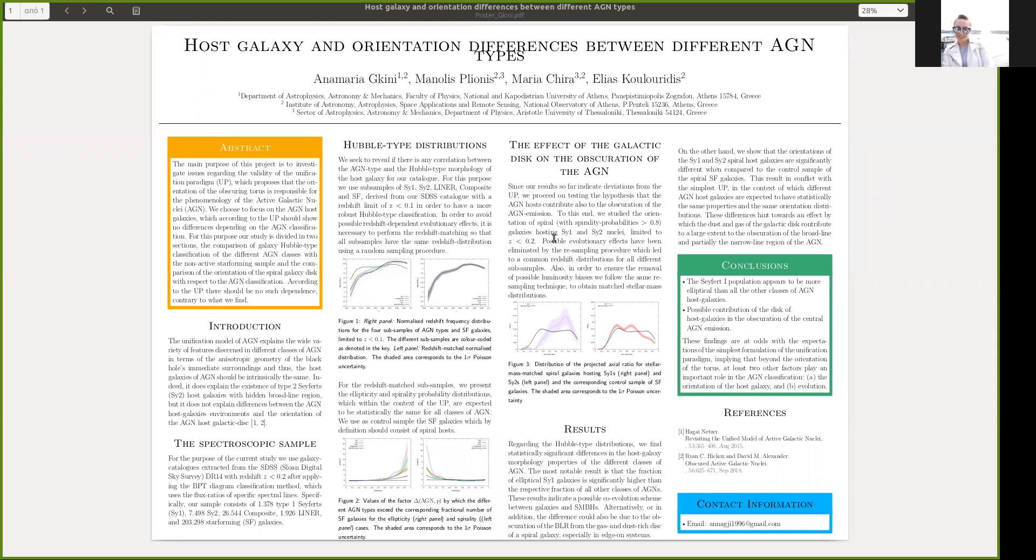For our study, we used a spectroscopic sample of Seyfert-1, Seyfert-2, LINERs, composites, and star-forming galaxies with redshifts up to 0.2 from the SDSS Data Release 14.